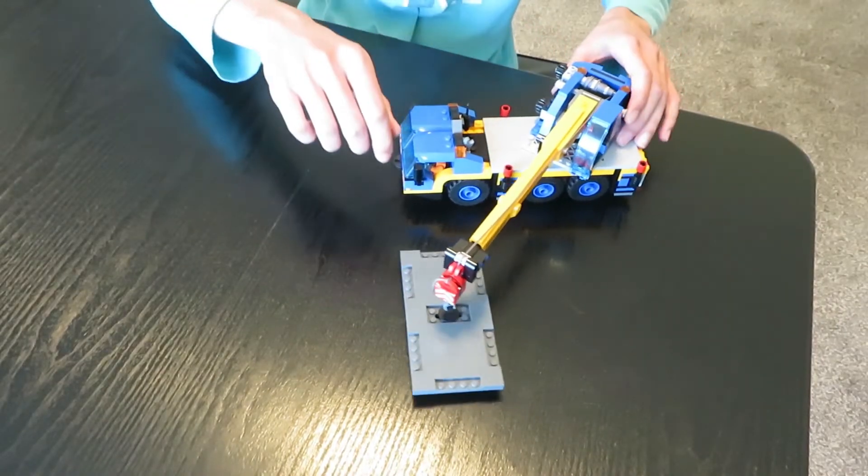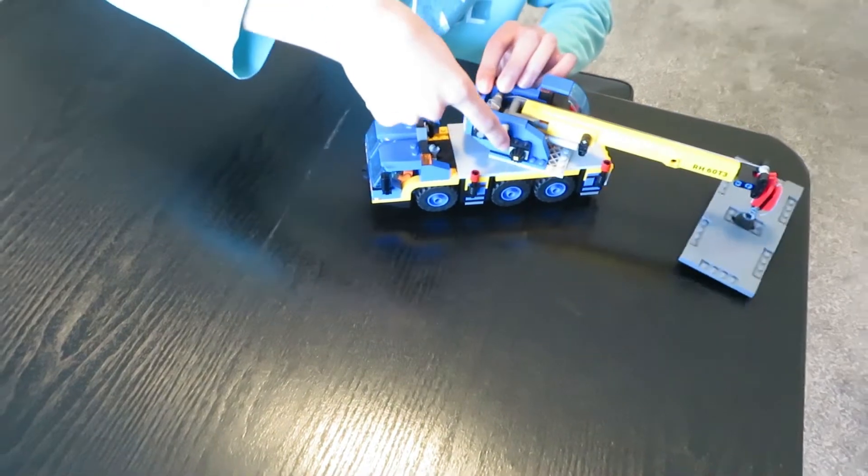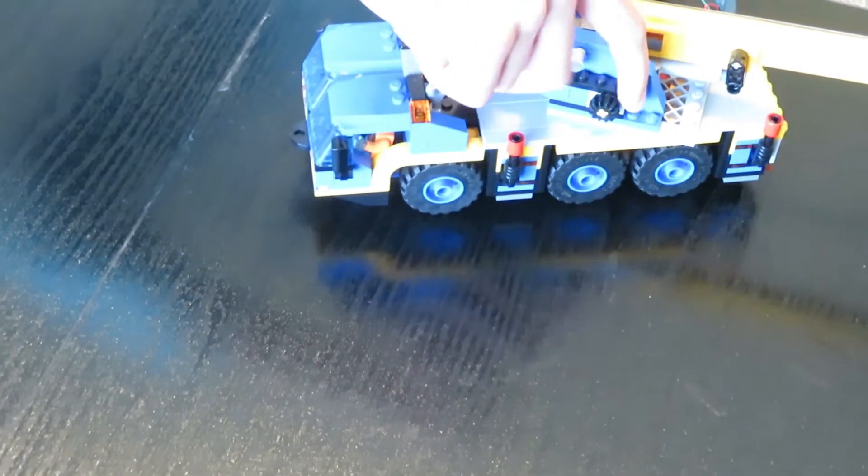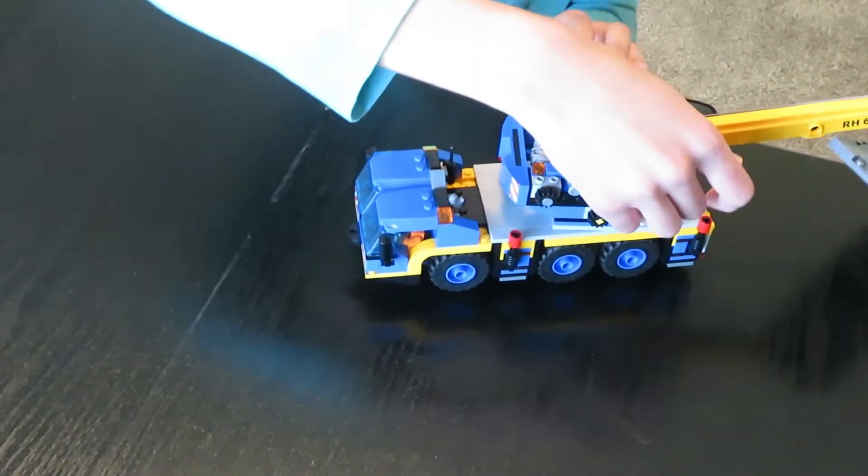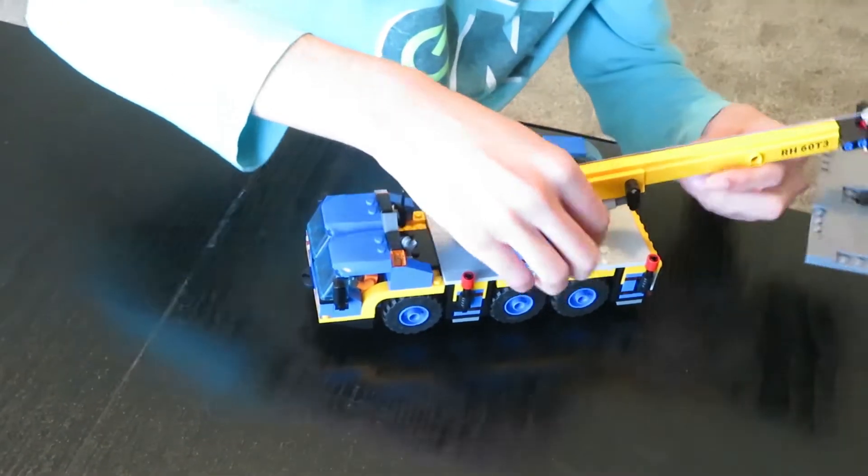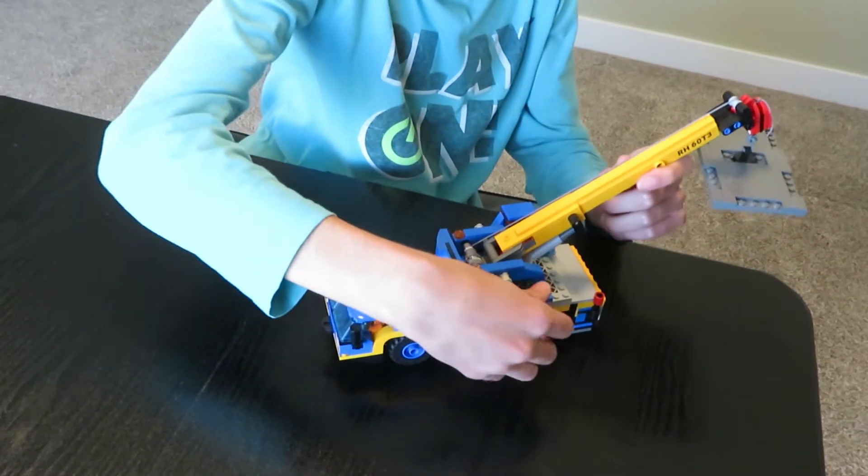And something else that's cool about this - this knob over here, when you turn it, it brings your boom up. And the boom actually has a linear actuator. It's like a hydraulic cylinder.